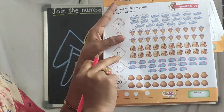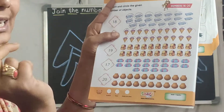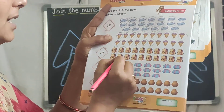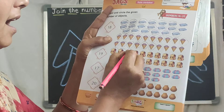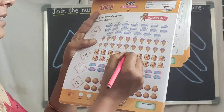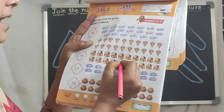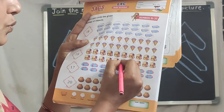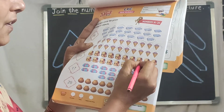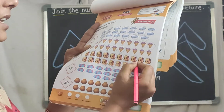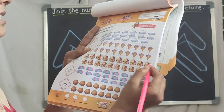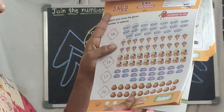Next, what is number 19? Circle the 19 bags. 1, 2, 3, 4, 5, 6, 7, 8, 9, 10, 11, 12, 13, 14, 15, 16, 17, 18, 19.